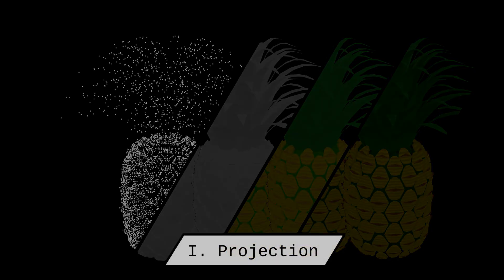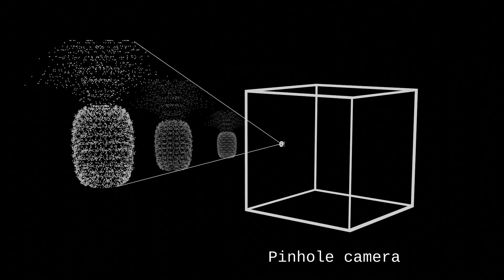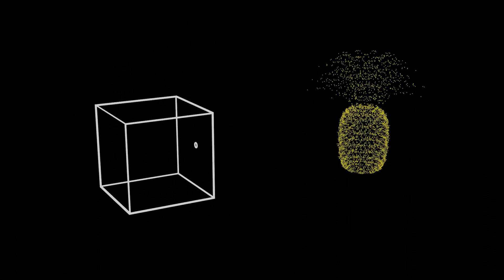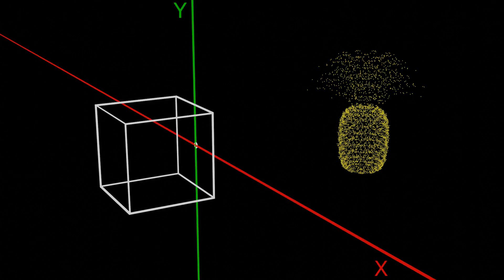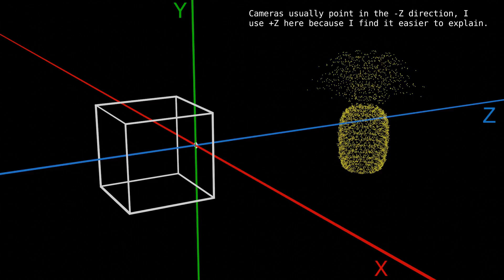We'll start with vertices. Our goal is to take this 3D point cloud and project it into a 2D surface. One way to do this is to imitate the way pinhole cameras work in real life. Light enters through the aperture of the camera and gets projected into a sensor that interprets the signal as an image. Let's place our simulated camera at the origin of the coordinate system, at the intersection of three axes: X, Y, and Z. The camera is looking in the Z direction, where the point cloud is located.